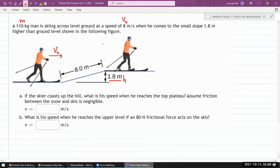And it's asking for coasts of the hill. What is his speed when he reaches the top plateau? And it says assume friction is negligible.